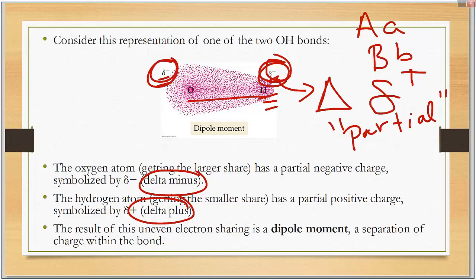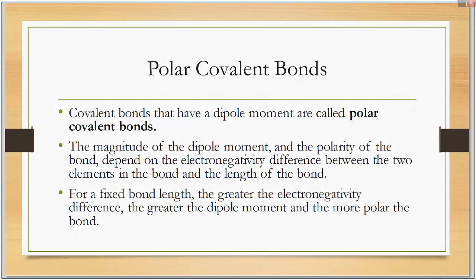The result of uneven electron sharing is a dipole moment, a separation of charge within the bond. Covalent bonds that have a dipole moment are called polar covalent bonds. The magnitude of a dipole moment depends on the electronegativity difference between the two elements and the bond length. For a fixed bond length, the greater the electronegativity difference, the greater the dipole moment and the more polar the bond.